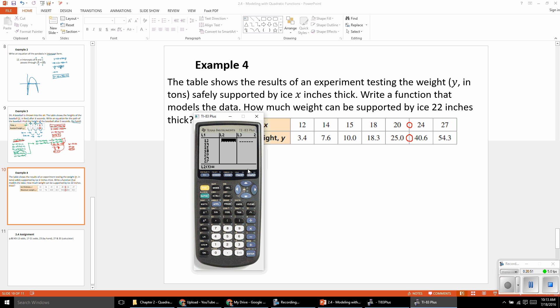Then I'm going to toggle over to list two. Here's where I want to make sure I'm matching up my ice thickness with how much weight it can support. So 3.4 tons is my first output, 7.6 tons. Then we've got 10.0, 18.3, 25.0. There's our 40.6, and lastly, 54.3. And we just want to check and make sure that each of our inputs is matching up with an output. Otherwise, this will not work.